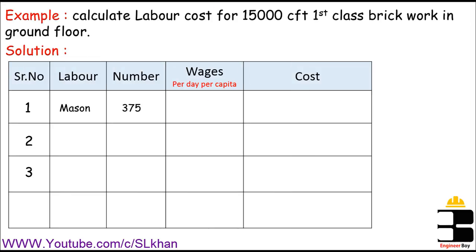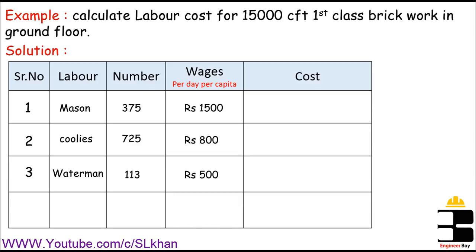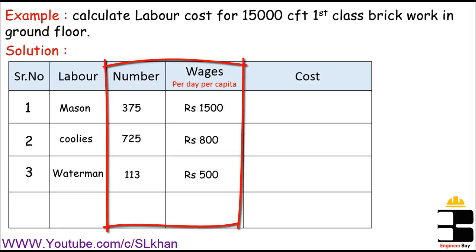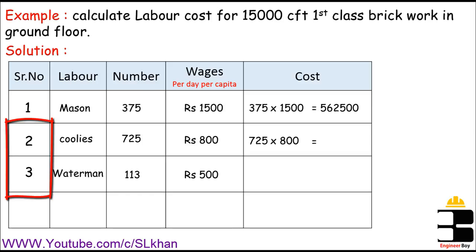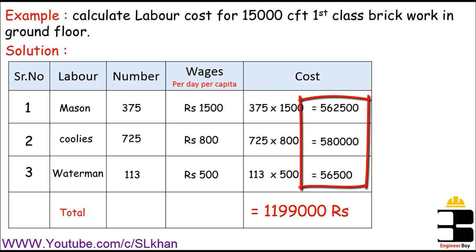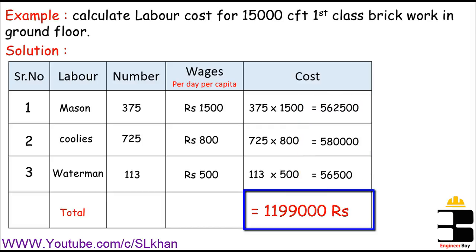Finally, we have the number of masons, coolies, and watermen. Now we'll estimate their wages — per day per capita. Look at your country's mason, coolie, and waterman wages. Here in Pakistan, masons earn about 1,500 Rs., coolies earn 800 Rs., and watermen earn 500 Rs. We just multiply the number by the wages. For example, the cost of masons is 375 multiplied by 1,500. We do the same for coolies and watermen, then add all three together to get the total labor cost, which is 1,190,000 Rs.